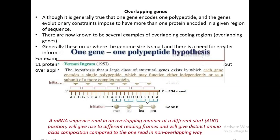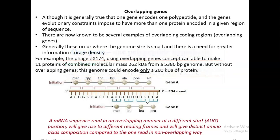Although it is generally understood that one gene encodes one polypeptide, evolutionary constraints commonly impose more than one protein to be encoded in a given region of the sequence. Here comes the role of overlapping genes, also called overlapping coding regions. Generally, they occur where the genome size of an organism is small and it needs greater information to be stored in that particular genome.